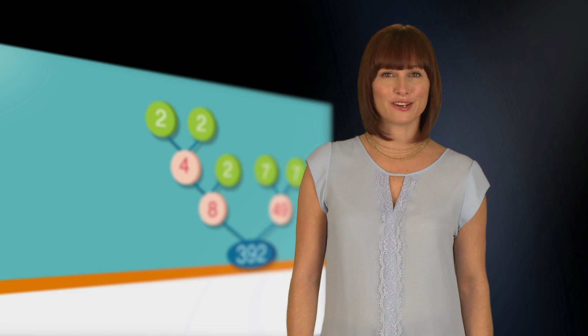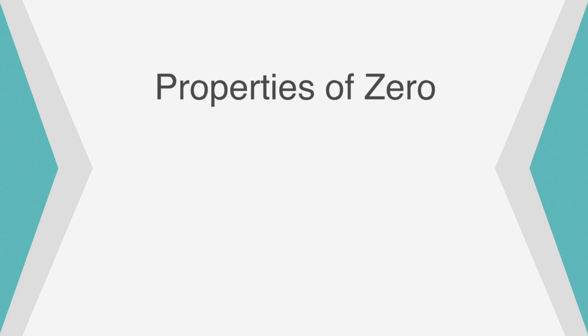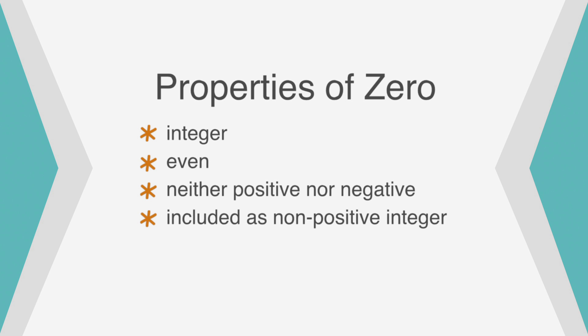Let's switch gears and focus on the properties of 0. 0 has some unique properties. It is an integer, it is an even number, and it's neither positive nor negative. So, it's included as a non-positive integer as well as a non-negative integer. So, you wouldn't list 0 when asked for positive integers or negative integers, but you would include 0 when asked for non-negative or non-positive integers.